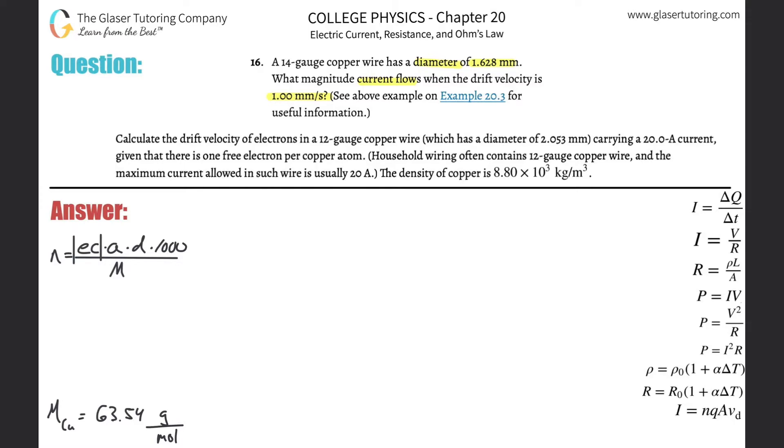The first thing is we have to find current and we know the drift velocity. We need a formula that relates the two, and that formula is that the current will equal the electron density of the wire multiplied by the charge value of the moving electron, multiplied by the cross-sectional area, then multiplied by the drift velocity. So in order to find I, I need to know these four things.